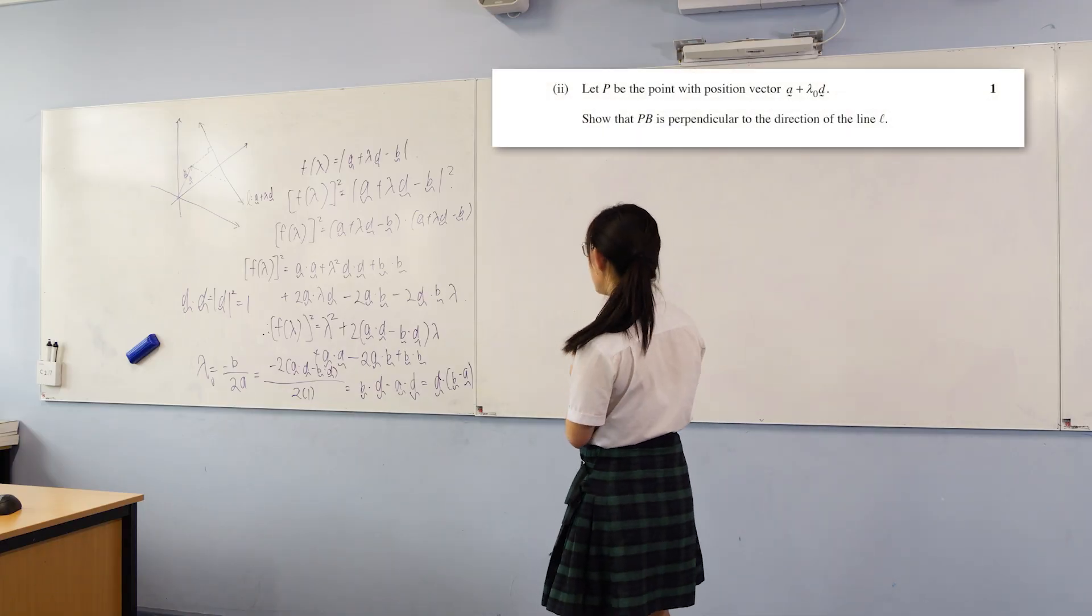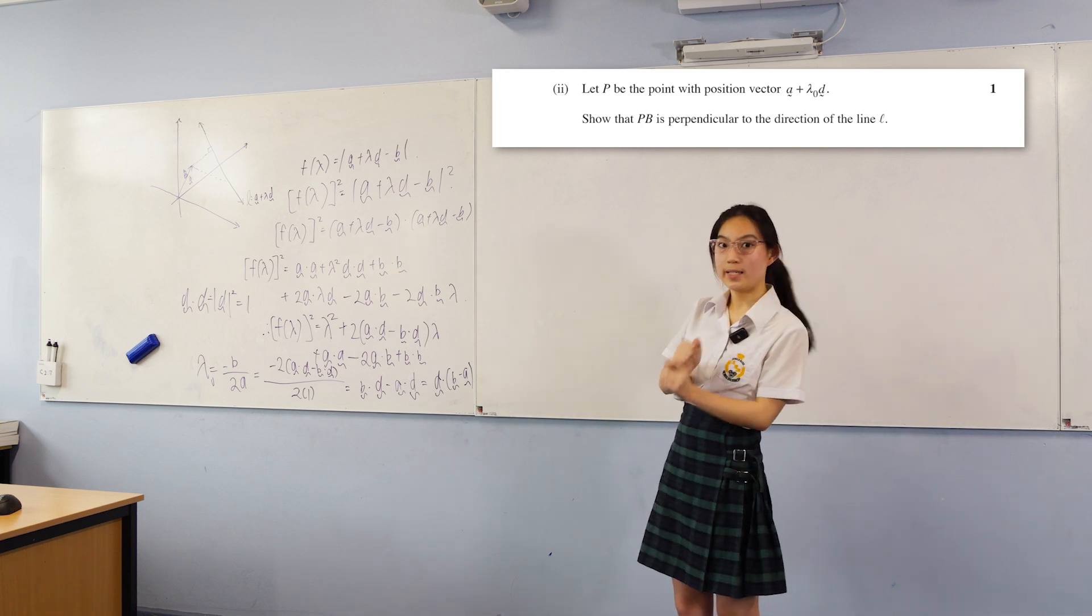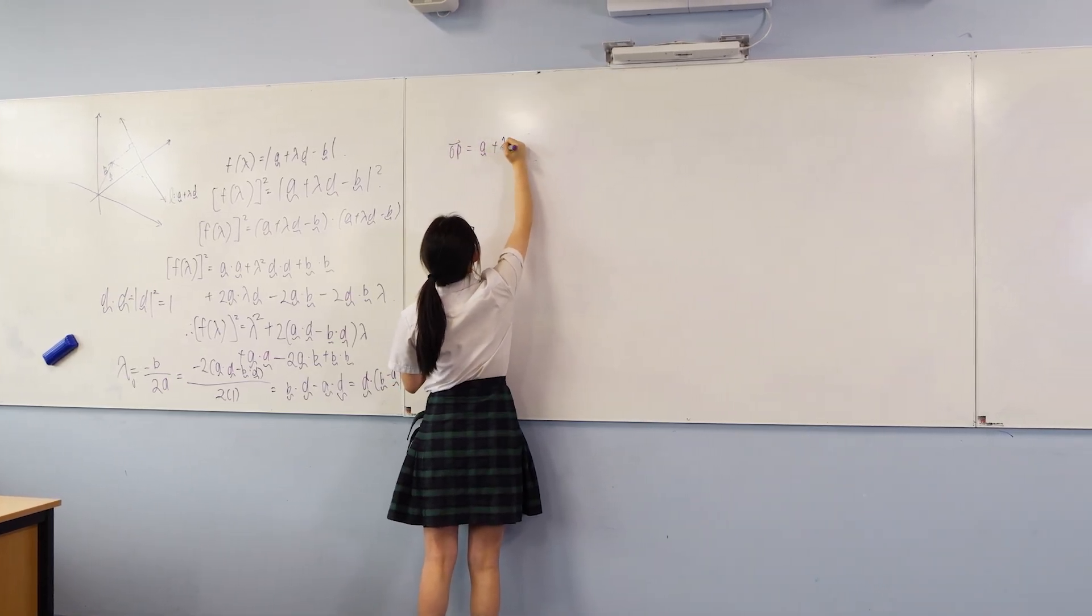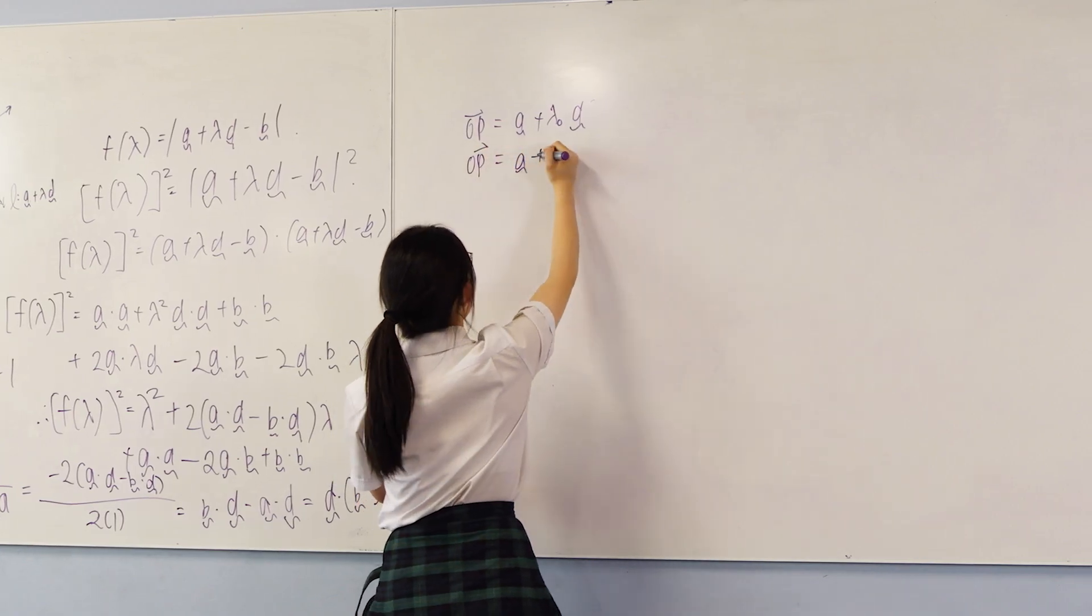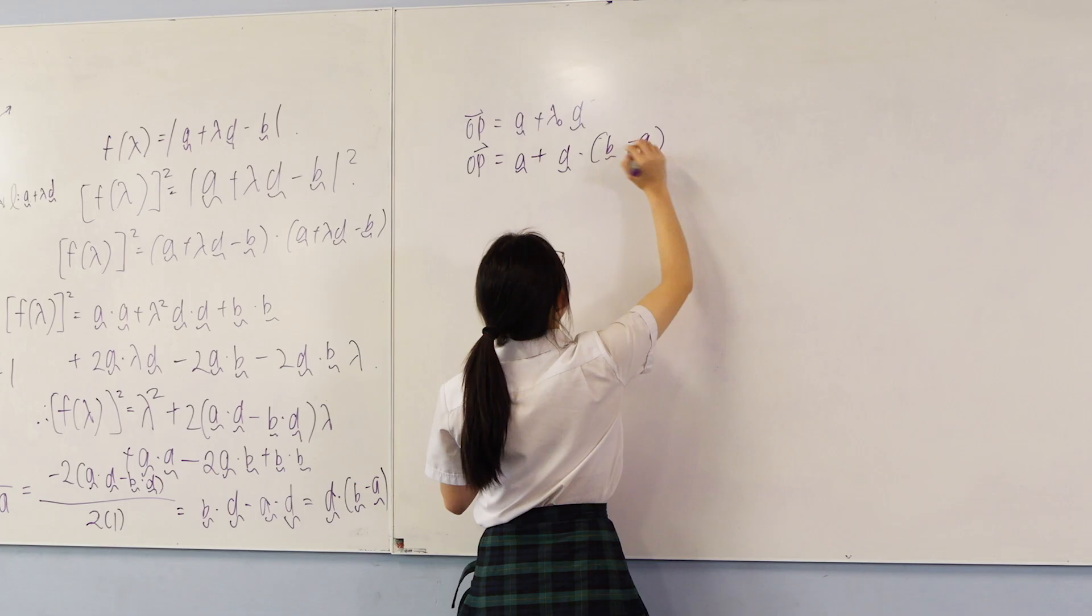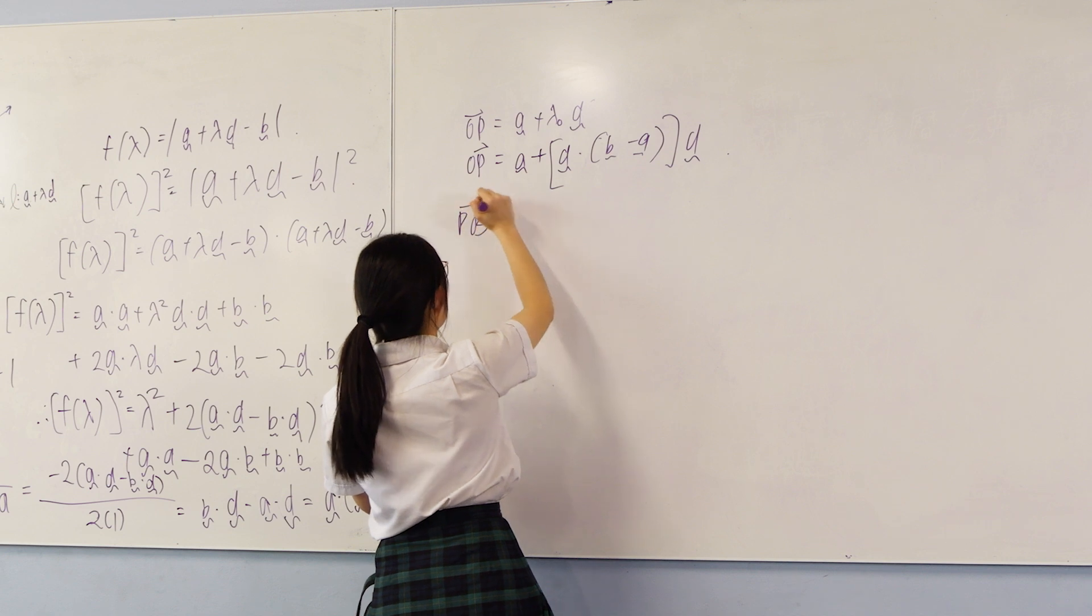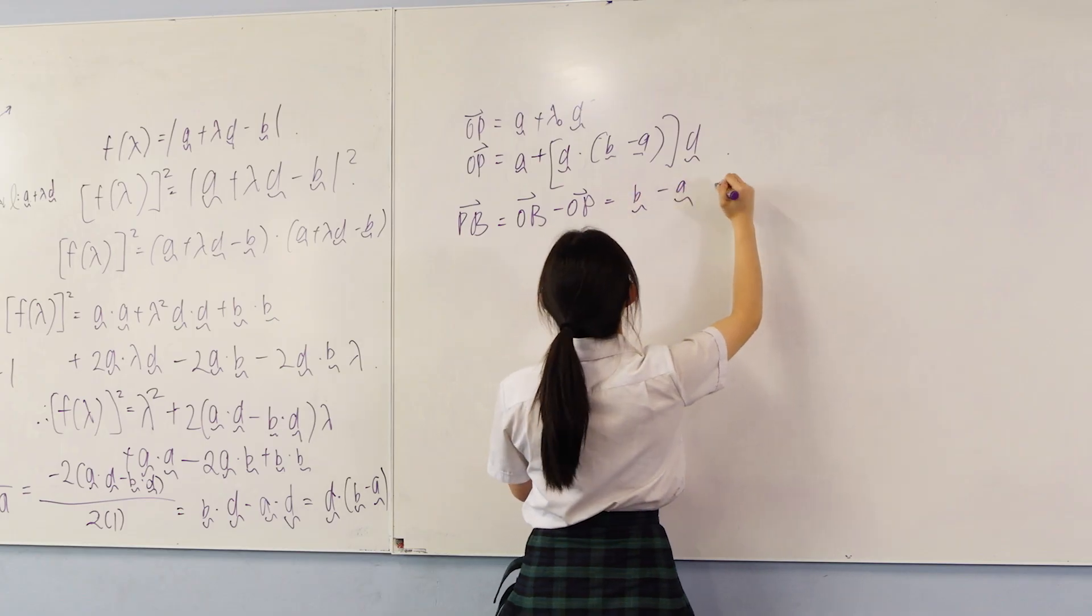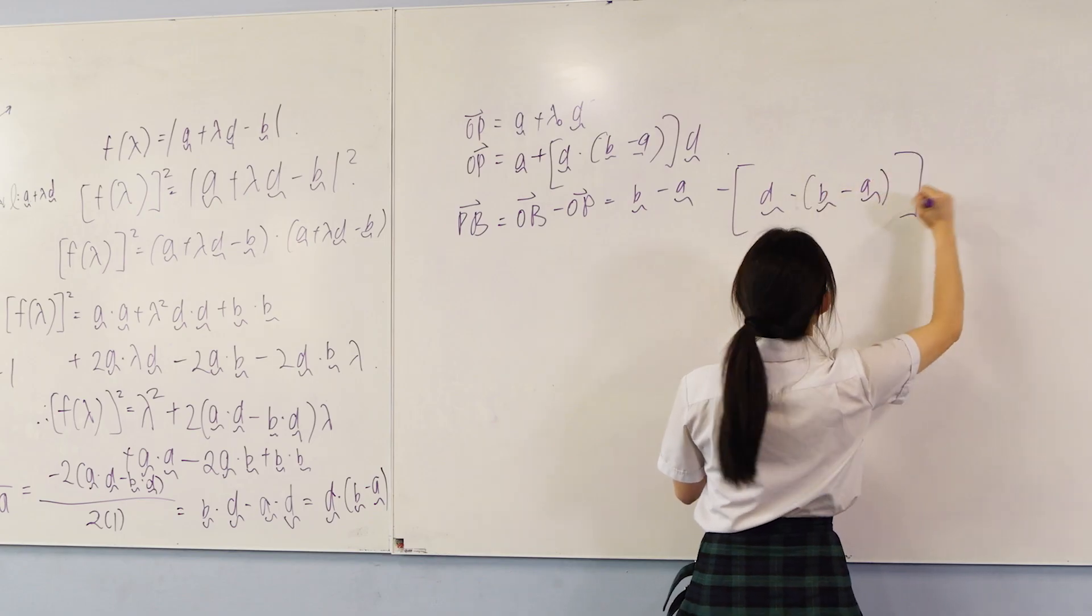For part 2, we want to show that the vector pb is perpendicular to the line l. We can achieve that by finding the dot product between pb and l. From part 1, we know that op equals a plus lambda naught d. This gives a plus d dot product b minus a times d. This means that vector pb equals ob minus op equals b minus a minus d dot b minus a times vector d.